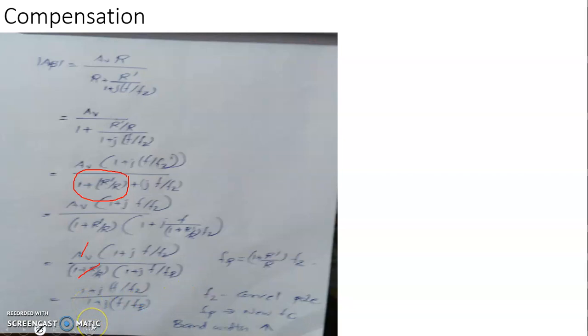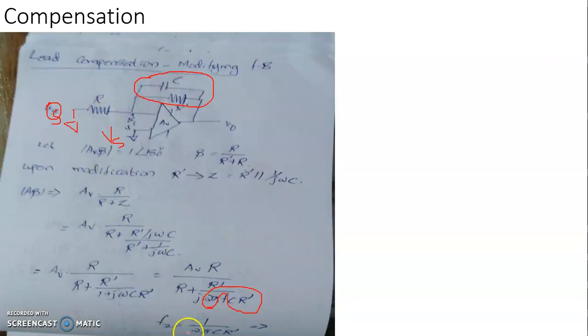Here also, you have the scope to introduce a pole and zero. That zero frequency can be used to cancel the dominant pole that already exists in the circuit. That dominant pole will be cancelled using this zero frequency, and you can fix a new dominant pole frequency Fp, given by 1 plus R prime by R into Fz. So Fz is designed using this relation: 1 by 2πC R prime.